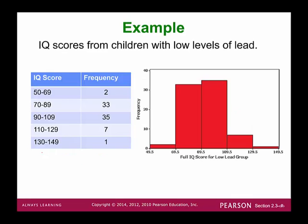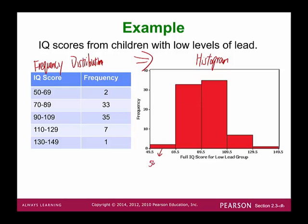This is our frequency distribution table. We basically convert it to a graph — this is what we call a histogram. You list all the classes: the first class is from 50 to 69 with a frequency of 2. The second class is from 70 to 89 with a frequency of 33.